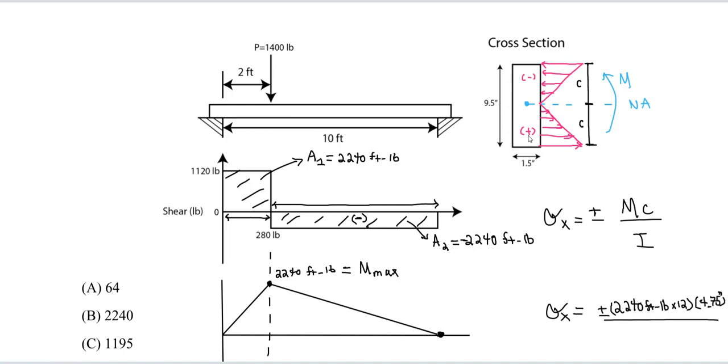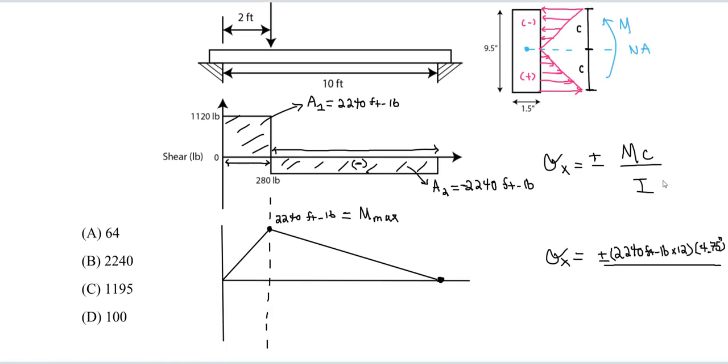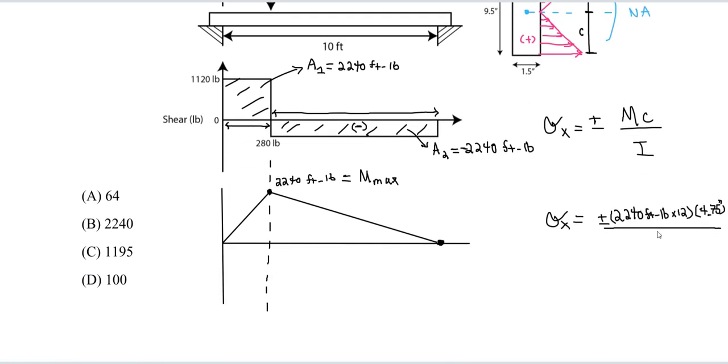And all of this is divided by the I. I in this case, we have just a rectangle. So for a rectangle, I is 1/12 base times height to the third. It's always 1 over 12. The base in this case is 1.5, 1.5 inches times height. The height is 9.5. And don't forget to raise this to the power of 3. So we have all of that.